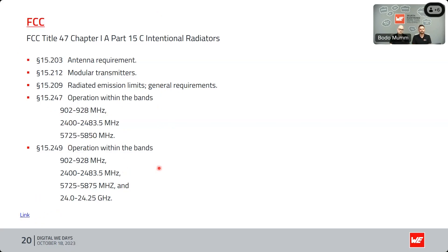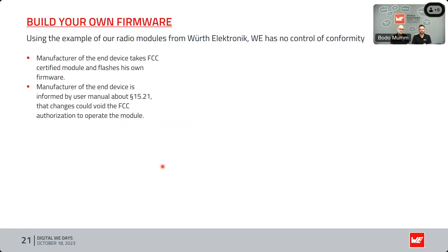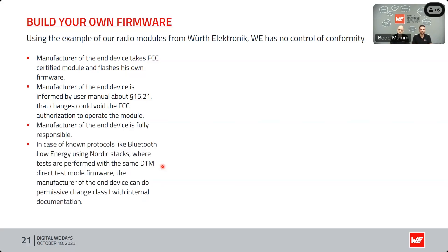In terms of building your own firmware for FCC, it's nearly the same as for CE. The manufacturer of the end device must ensure everything is compliant, and if they change radio-specific parameters, a completely new certification is required. For known protocols like Bluetooth Low Energy using the Nordic stack, tests are performed with the same Direct Test Mode — the manufacturer can do a Permissive Change Class B with internal documentation, similar to the CE process.